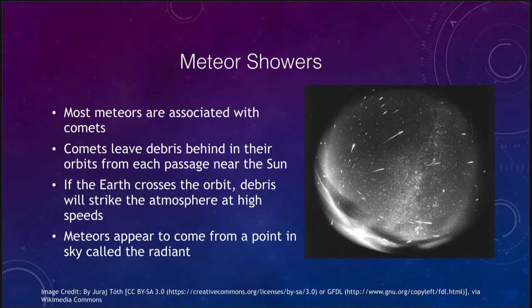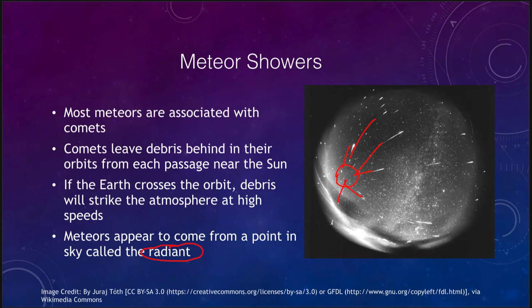During a meteor shower, all the meteors seem to come from the same point in the sky. If you trace them back, they appear to originate from one specific point, which we call the radiant or radiant point. This is essentially an optical illusion — they are all traveling through space parallel to each other, and when we see them coming in they all seem to come from the same direction, just like telephone poles or railroad tracks that appear to converge at a distance.